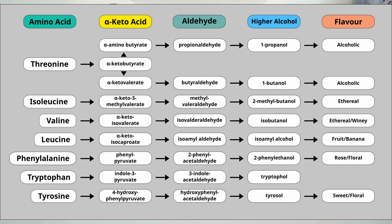And then tyrosine gets turned into 4-hydroxyphenylpyruvate, then hydroxyphenylacetaldehyde and then tyrosol which is supposed to have just a general sweet floral flavor and odor. You can see that some of the pretty pronounced or well-known flavors that you find in spirits come out of this Ehrlich pathway.